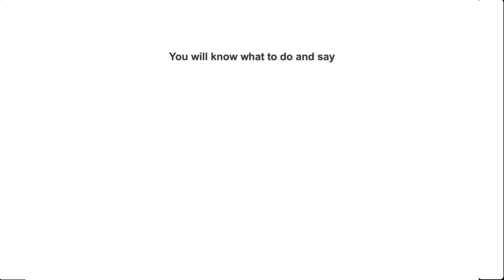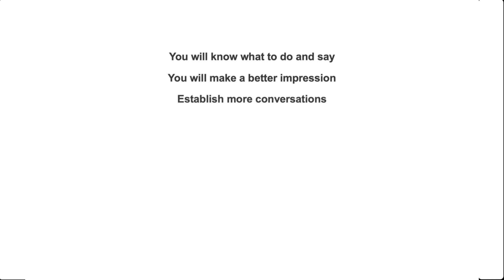So what can you expect from implementing the SMART Sales System? Our expectation is that the system will help you become a smarter salesperson. One way we'll do that is by improving your ability to know what to say in all common sales prospecting situations. You'll go from improvising or being uncertain to having confidence and clarity. Because you're communicating better and making a better impression, you should improve your ability to establish conversations and handle objections — leading to more conversations overall.